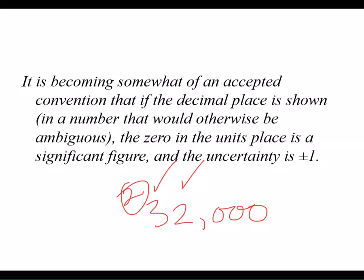Now, if we go ahead, and I'm reading my slide again, if we go ahead and put 32,000 and instead of implying the decimal, if we put the decimal, okay, if we accept that if the decimal place is shown, not implied but shown,